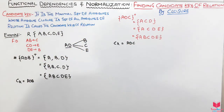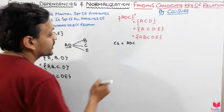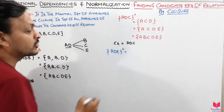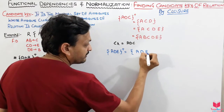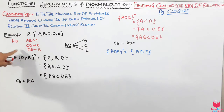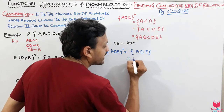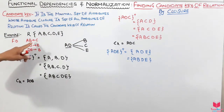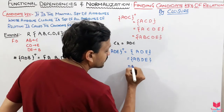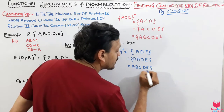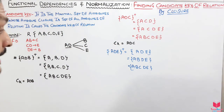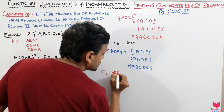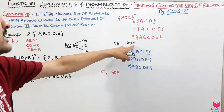Now compute the attribute closure of ADE. Starting with {A, D, E}, from DE → B we add B, giving {A, B, D, E}. From AB → C we add C, giving {A, B, C, D, E}. All attributes are present, so ADE is also a candidate key. We have three candidate keys: ADB, ADC, and ADE.